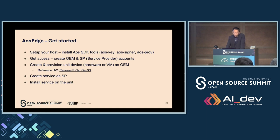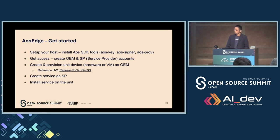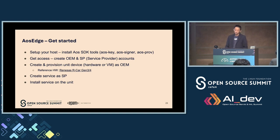Based on these accounts, you can create and provision a unit device — it can be hardware or a virtual machine. As reference hardware, we already have the Renesas R-Car Gen 3 and Gen 4 boards available. If you have one of those, you can start working on it already. You'd create a container service as a service provider, install it to the unit, and if you have multiple units you can try dynamic rebalancing.